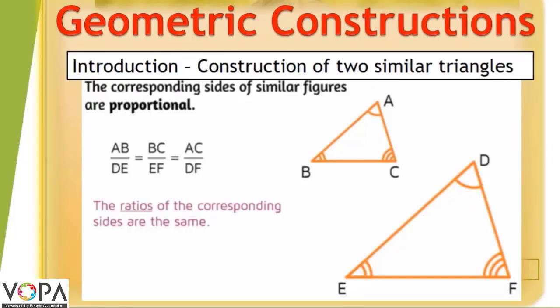When two triangles are similar, then the corresponding sides of the similar figures are proportional. As shown in figure, triangle ABC similar triangle DEF, then AB upon DE is equals to BC upon EF is equals to AC upon DF. Here, the ratios of corresponding sides are the same.